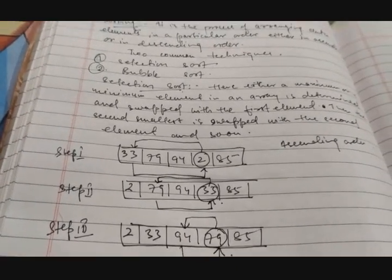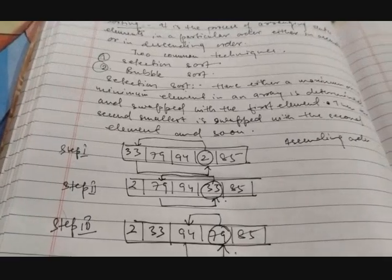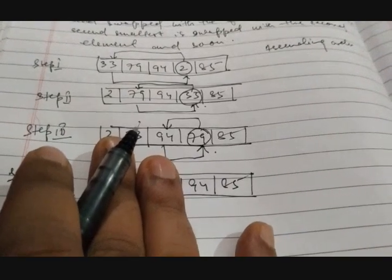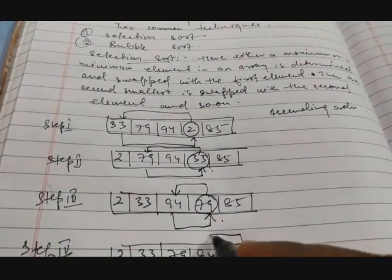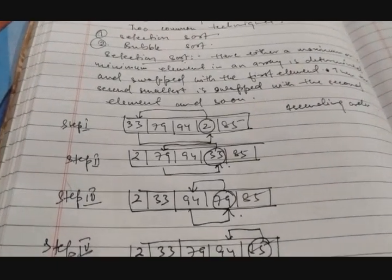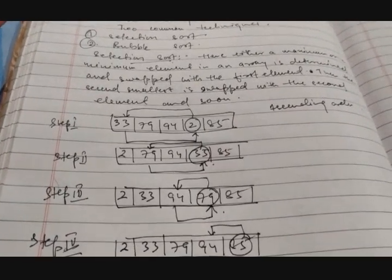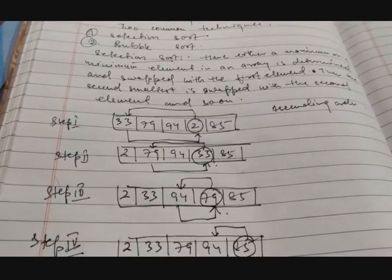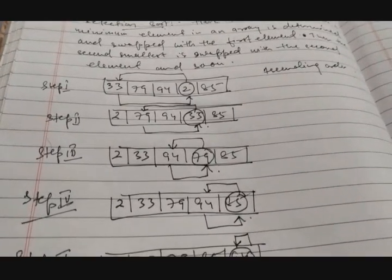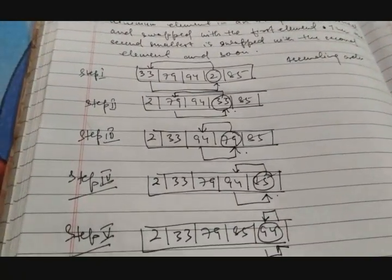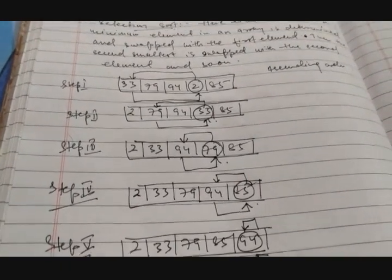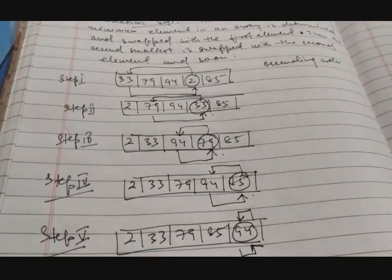After step three, three elements are sorted. In step four, among the remaining elements 79 and 94, 79 is smallest. In step five we have: 2, 33, 79, 85, 94. The smallest remaining is 94 and it gets swapped with its own position. In step six, the sorted array is: 2, 33, 79, 85, 94. The arrangement is done from left to right.